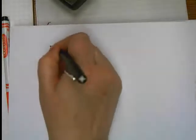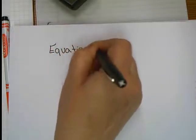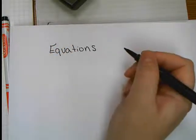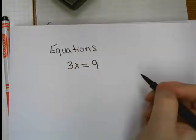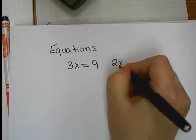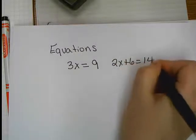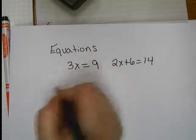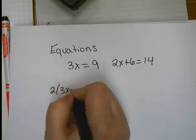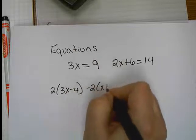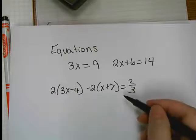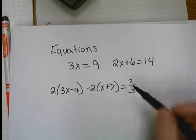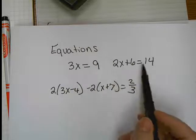Okay, so today we're going to talk about equations. The difference between an equation and an expression is an equal sign. This is an example of an equation. That's an example of an equation. And that's an example of an equation, and we're actually going to be solving those later on today. But I want you to remember that it always has an equal sign.